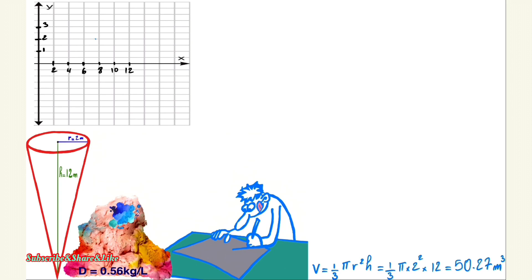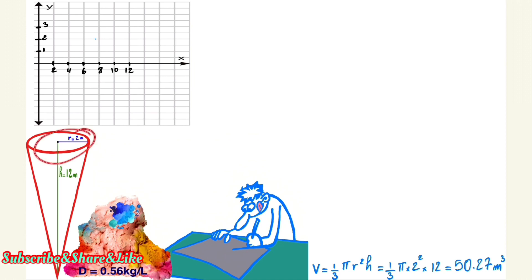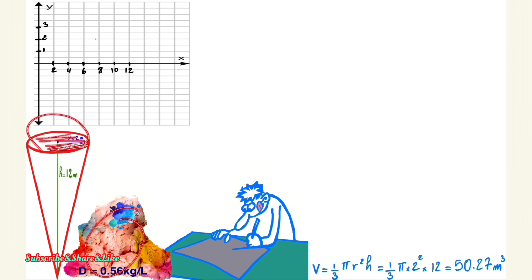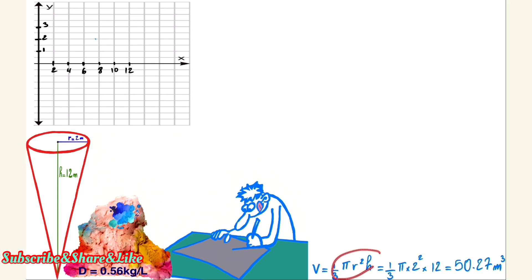Hello everyone, I'm Stefan. In this tutorial we'll learn how to derive the formulas for the volumes of different shapes from scratch without memorizing anything. We can still calculate the volumes of different shapes using calculus. We have a cone with a height of 12 meters and a radius of 2 meters, and we'll find how much volume and mass of ice cream we need to fill it to the top.